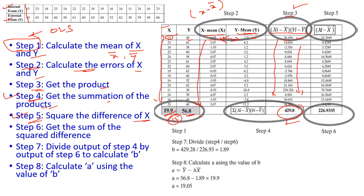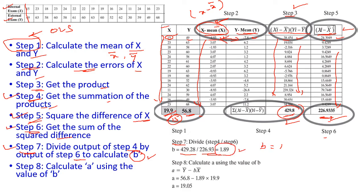Step 5: square the difference of x — that is, (xᵢ − x̄)². For example, (−4.03)² = 24.30. Step 6: get the sum of all squared differences. Step 7: divide the output of step 4 by step 6 to calculate b. So 429.28 divided by the sum of squared differences gives b = 1.89.